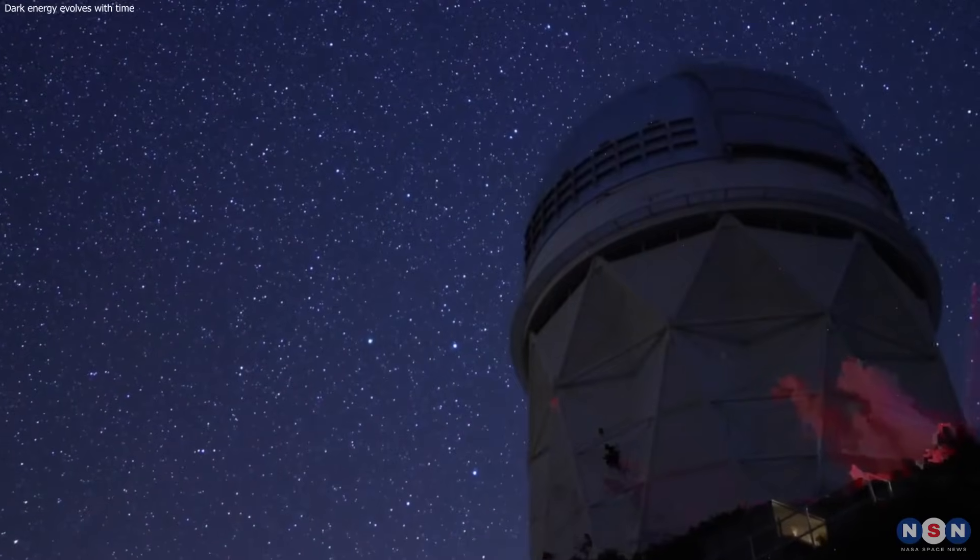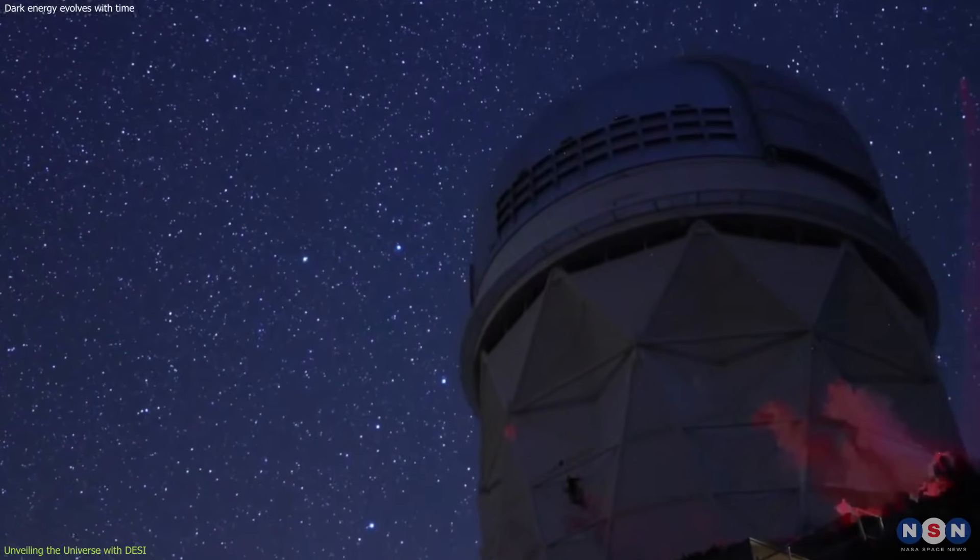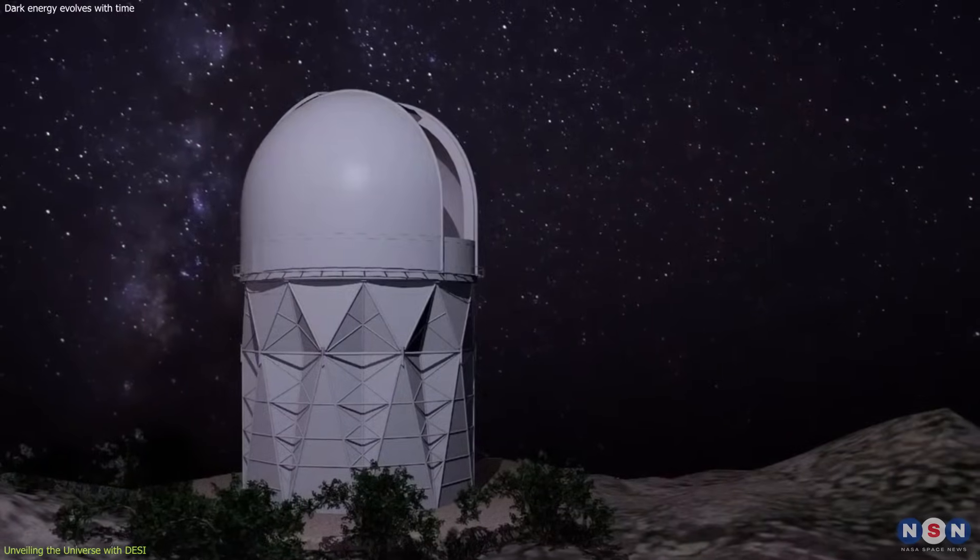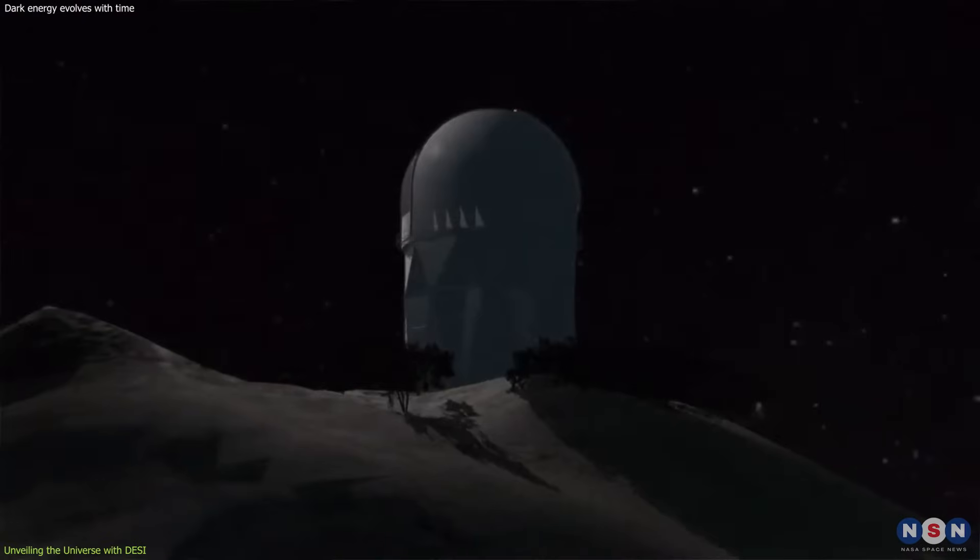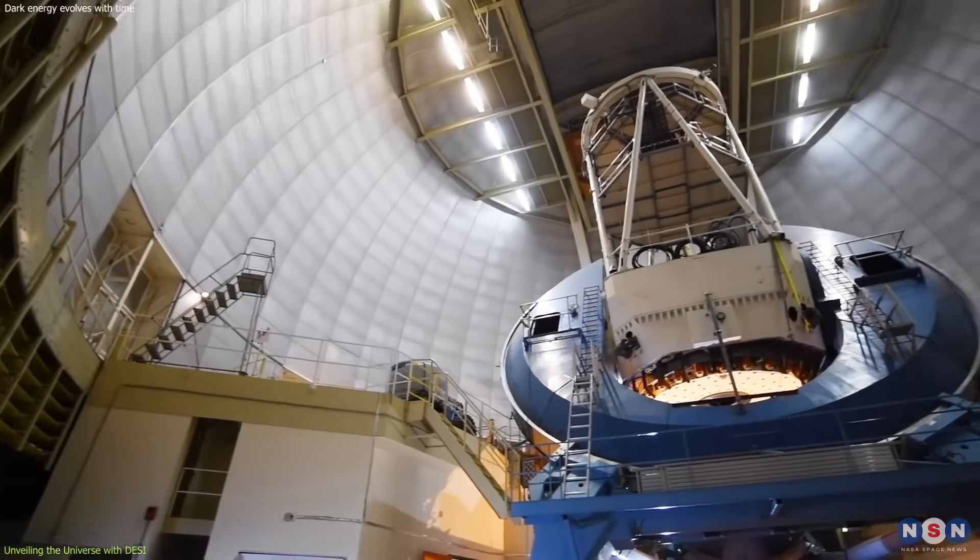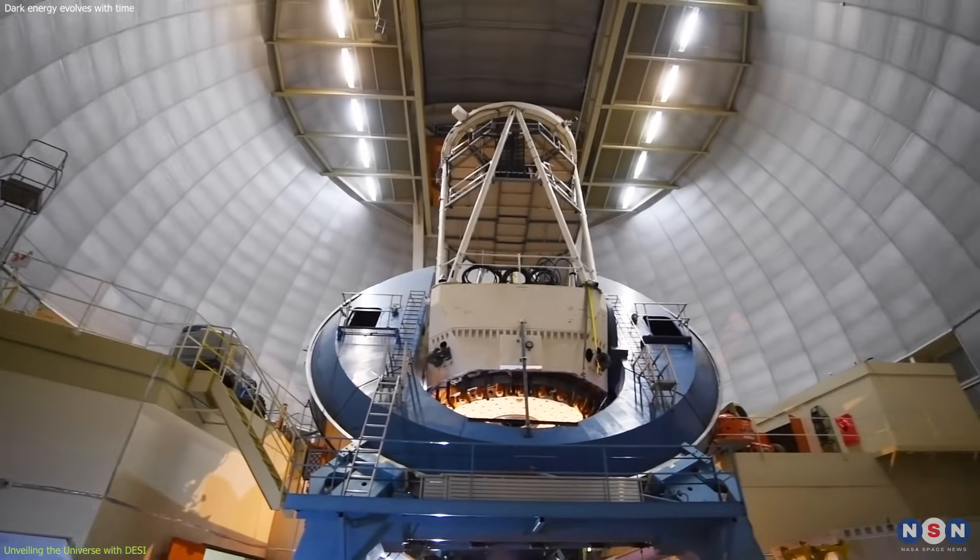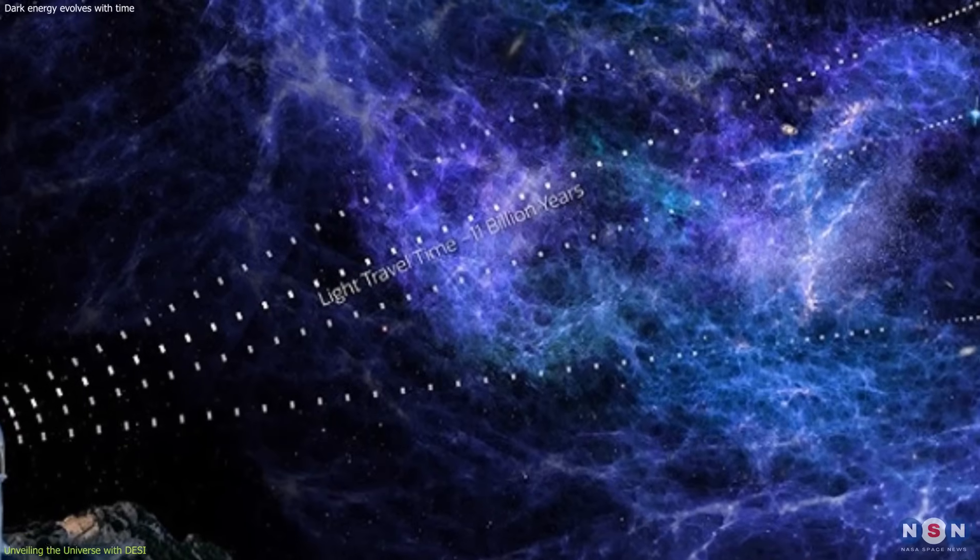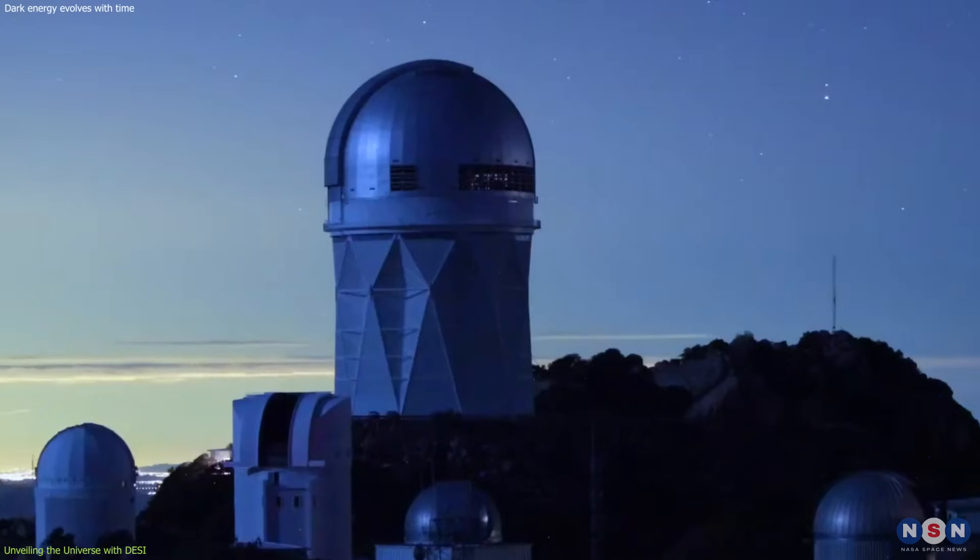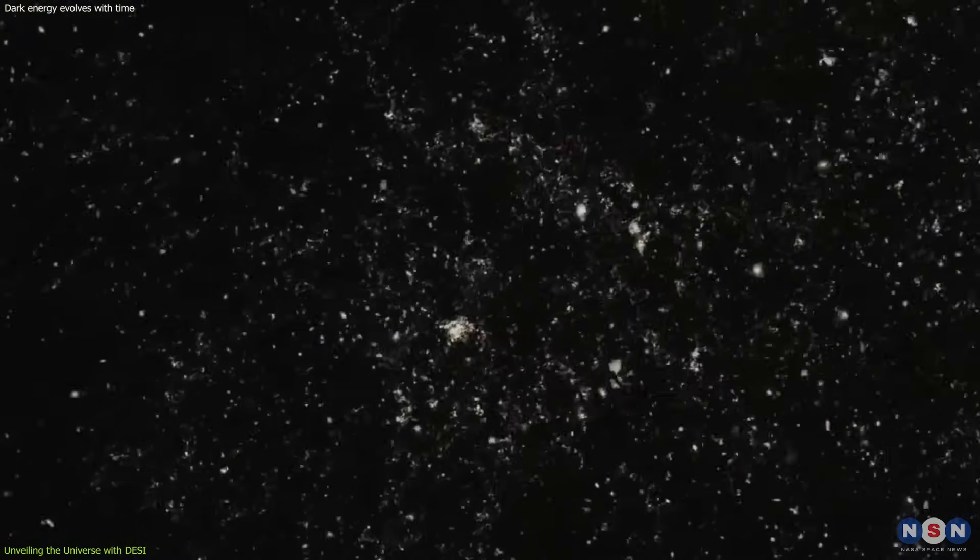The Dark Energy Spectroscopic Instrument is not just a telescope. It's a revolutionary tool that's reshaping our understanding of the cosmos. Located atop the Nicholas U. Mayall 4-meter Telescope at Arizona's Kitt Peak National Observatory, DESI is on a mission to unravel the mysteries of dark energy.